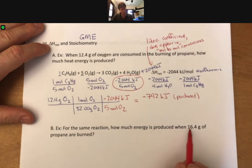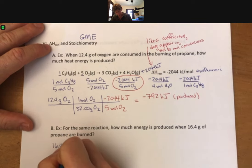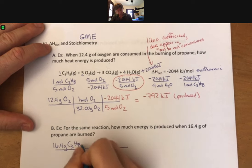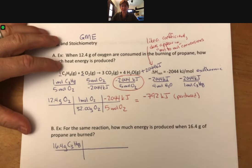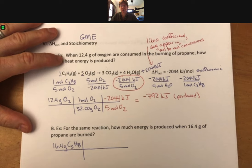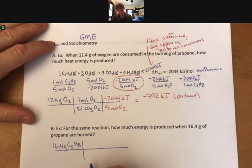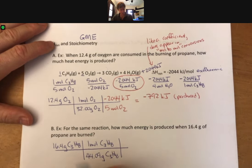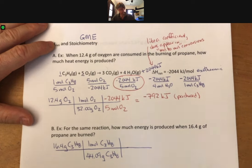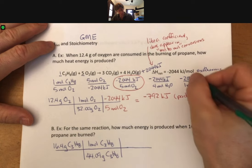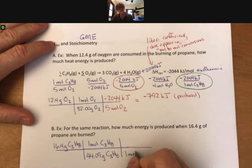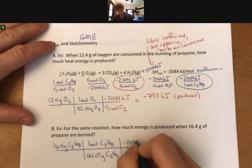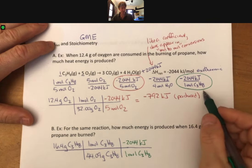Let's do something similar now for how much energy is produced when 16.4 grams of propane are burned. We're going to start with our 16.4 grams. I do remember that it's 44.09 grams of propane per one mole. We have one mole of C3H8 to minus 2044 kilojoules. And that is kilojoules per mole, which we already talked about.